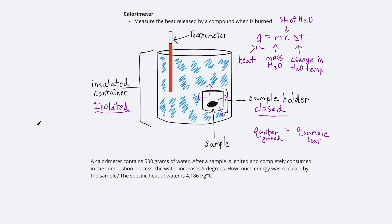First just read it and orient yourself. We know that a sample is ignited in this calorimeter and it increases the water by 5 degrees. And it's a 500 gram sample of water. So the first thing you want to do is think about how much heat did the water absorb.